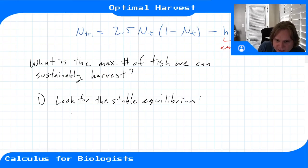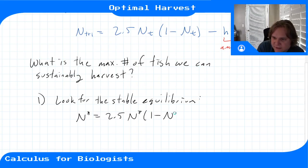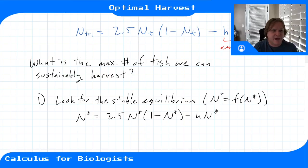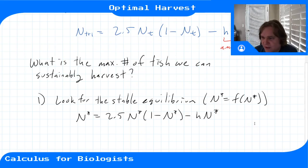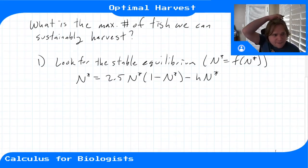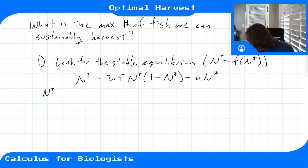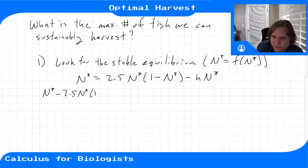Recall that means we want to solve: n* = 2.5 · n* · (1 − n*) − h · n*. We're looking for the number n* for which the update equals what we started with — n* = f(n*). Once we're at n*, we'll always have the same number of fish each generation. To solve this equation, we move everything to the left side.